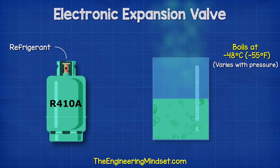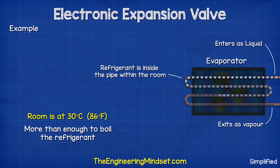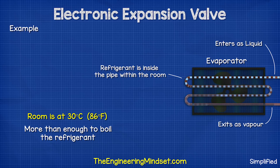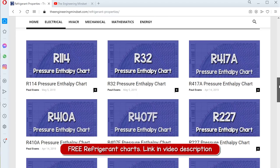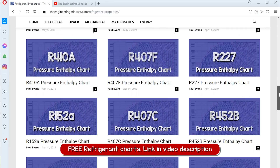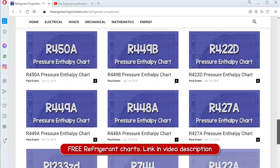But if the refrigerant is inside a pipe within a room and the room is at 30 degrees Celsius or 86 degrees Fahrenheit, then this will be more than enough to cause it to boil from a liquid into a vapor. By the way, if you want some refrigerant charts you can download these for free from our website. I'll link to these in the video description down below.